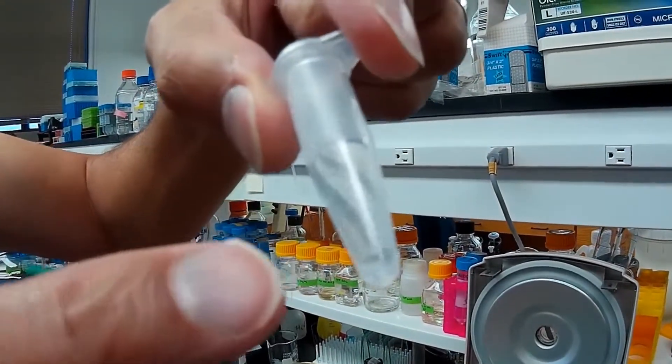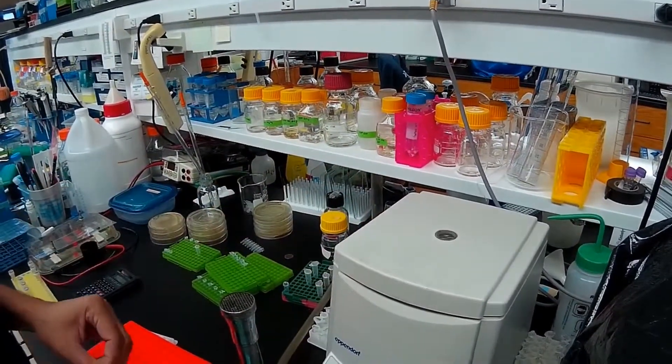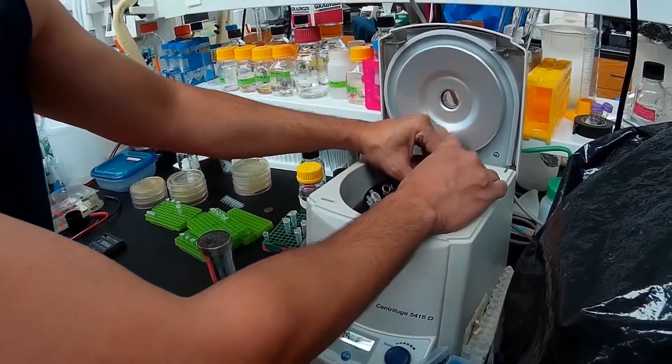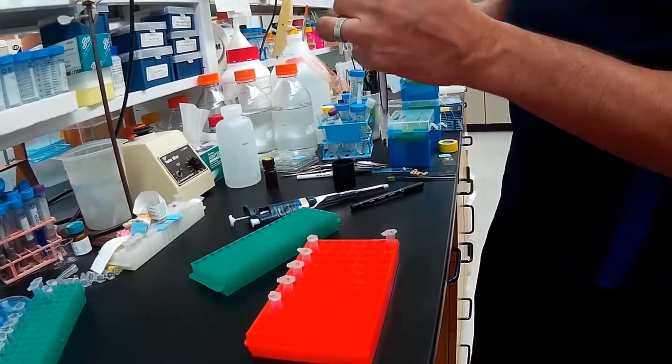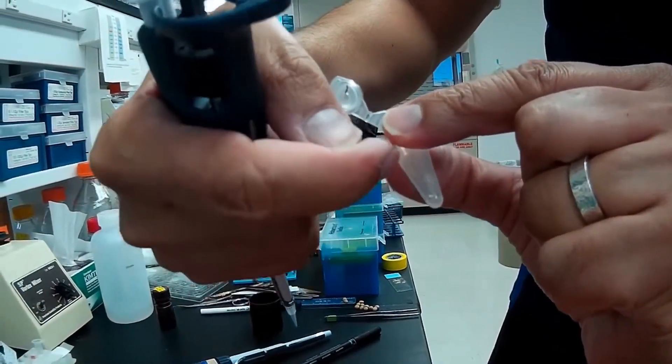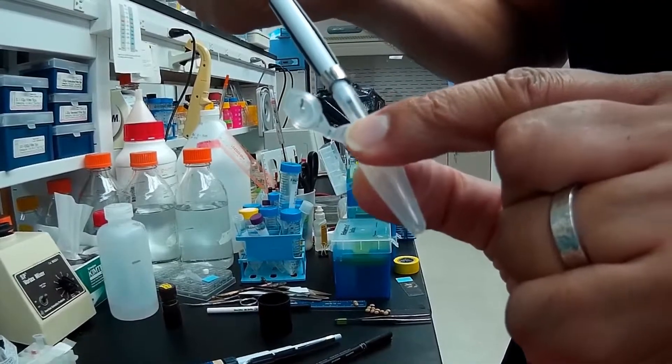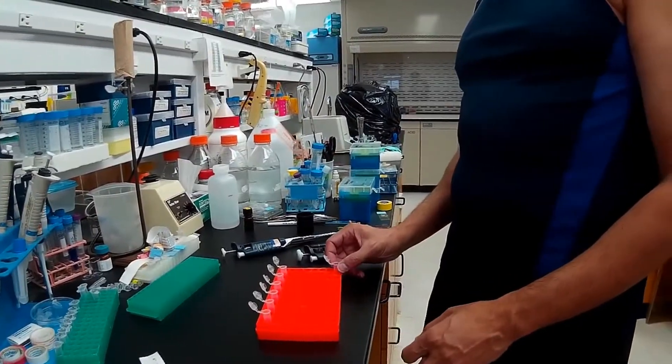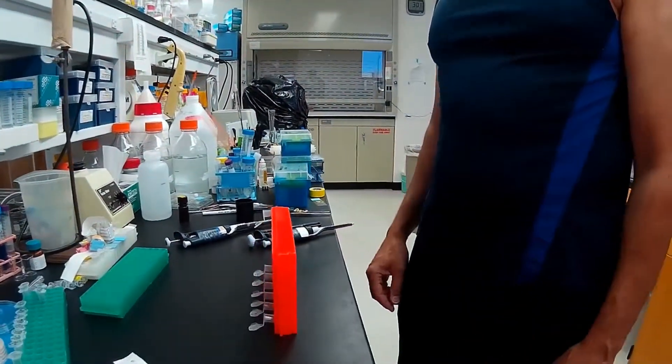Spin the tubes down again for five to ten seconds to collect the residual ethanol at the bottom of the tube. We'll use a pipette to remove the remainder of the 70% ethanol. This way we'll have no remaining ethanol in the tube. Again, stay away from the pellet. Pipette on the opposite side where the pellet is. There, now the tube is almost entirely dry. To further dry the tubes, we can put them on their side for about one minute, one to two minutes.